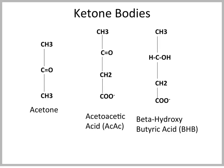Only acetone and acetoacetic acid are beta-keto acids — they only have the ketone group. Beta-hydroxybutyric acid is formed under an excess of hydrogen ions. So the more acidotic the animal is, the more conversion of acetoacetic acid to beta-hydroxybutyric acid occurs.